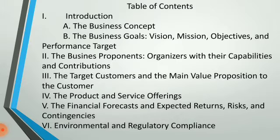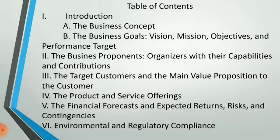Let's discuss the table of contents of a business plan. First, you'll have the introduction. Second, the business proponents. Third, the target customers and the main value proposition. Fourth, the product and service offerings. Fifth, the financial forecasts and expected returns, risks, and contingencies. And lastly, the environmental and regulatory compliance.